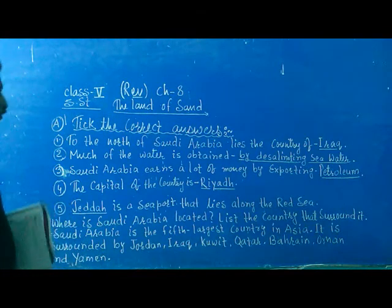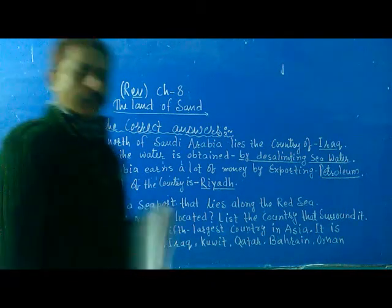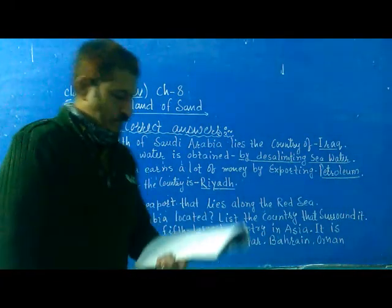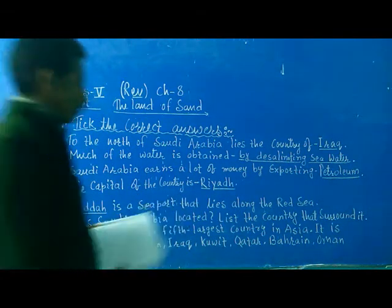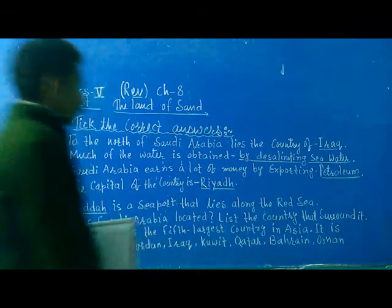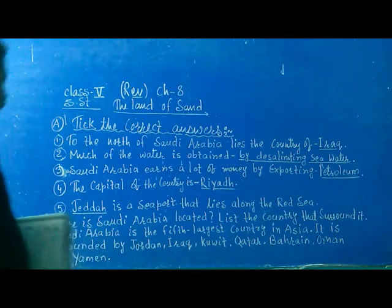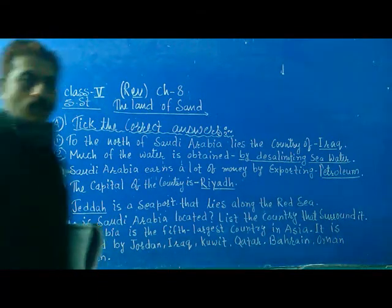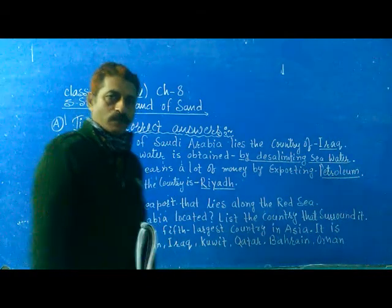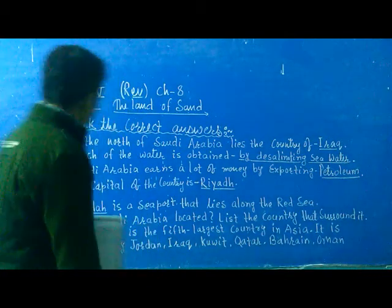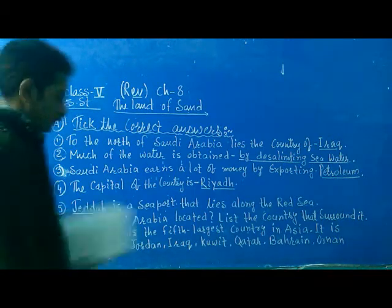First, in the north of Saudi Arabia, that is the country of Iran. Second, much of water is often by the island in the sea water. Saudi Arabia comes in the north of the land by executing the activity through the capital of the country, the city of Iraq.